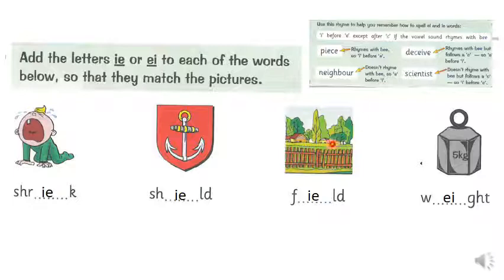Here were your answers. We had shriek, which was IE. Shield, which was IE. Field, which was IE. And weight, which was EI. Well done if you managed those.